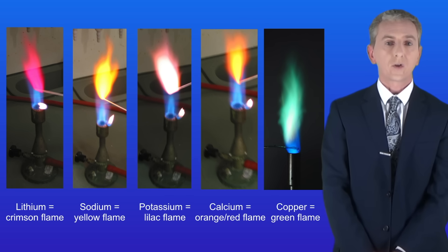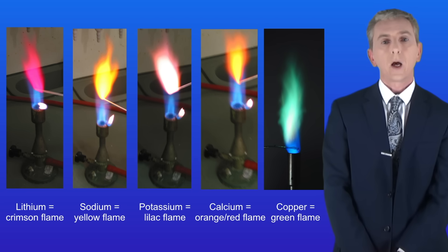In the last video we saw how to test for certain metal ions using flame tests, and I'm showing you the five that you need to learn here. Now we can also test for certain metal ions using their reaction with sodium hydroxide solution, and that's what we're looking at in this video.